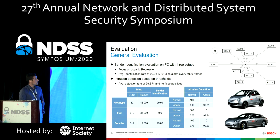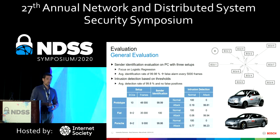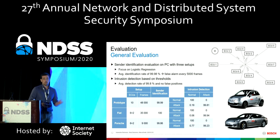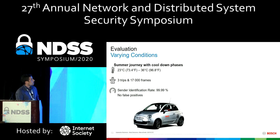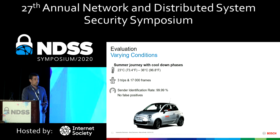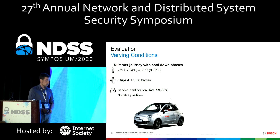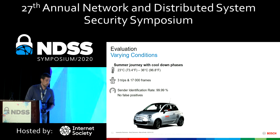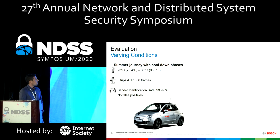Regarding how we simulated attacks: we changed the origin of frames during evaluation on a PC such that each ECU was faked by every other ECU, to ensure we did not select two ECUs that were easy to distinguish. While the previous evaluation was static — the vehicle was stationary and the engine was off except for the Porsche — we then analyzed a summer journey with temperatures between 23 and 63 degrees Celsius (73–96°F), seven trips, over 70,000 frames, and still achieved a high identification rate with no false positives.